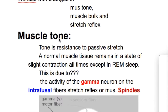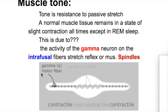What is muscle tone, how does it work, and what structures are involved in hypertonia? Tone is resistance to passive stretch. A normal muscle tissue remains in a state of slight contraction all the time, except in REM sleep, and this is due to the activity of the gamma neuron on the intrafusal fiber stretch reflex, or muscle spindle.